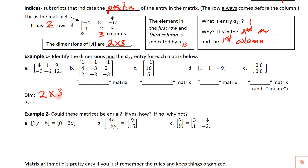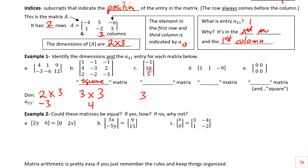The a-two-one entry is second row, first column, so that's going to be negative three. This next one has three rows and three columns — since the number of rows equals the number of columns, we call this a square matrix. The a-two-one entry is second row, first column, which is a four. This next one has three rows but only one column, so we call it a column matrix.